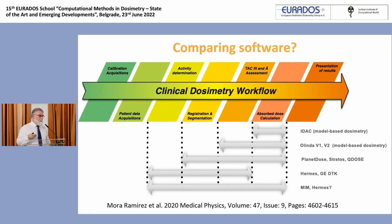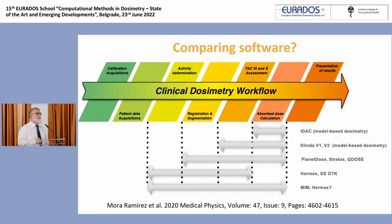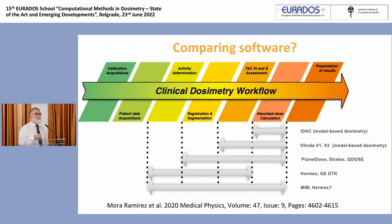For example, Hermes or MIM can do reconstruction — from activity determination to sometimes absorbed dose calculations. But some, like IDAC, require you to provide all the pharmacokinetic parameters; it doesn't do reconstruction, segmentation, or registration. It has to be said that most of the commercial codes currently available do not do reconstruction, but use reconstructed images with a calibration factor and do all the other steps up to the absorbed dose calculations.